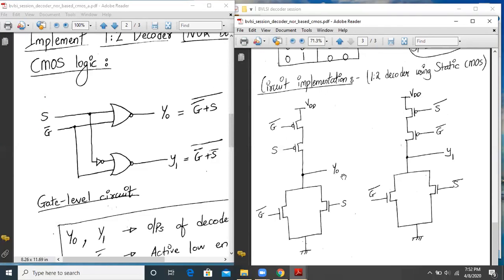That is the expression for Y0, which has input as G-bar and S. Similarly, Y1 expression will have two NMOS transistors in parallel, having the inputs G-bar and S-bar. And in the pull-up network, we have PMOS transistors connected in series, having the input as G-bar and S-bar.